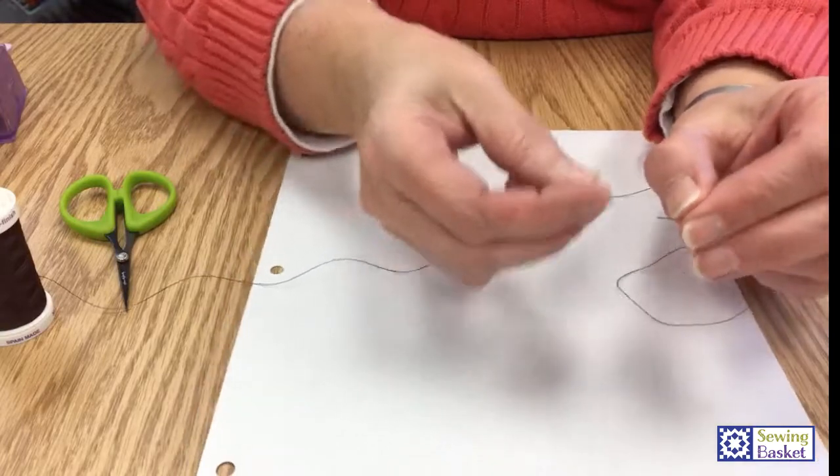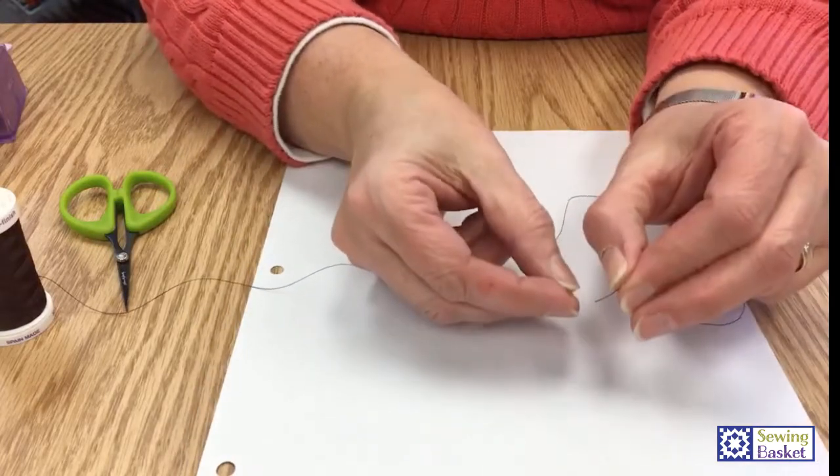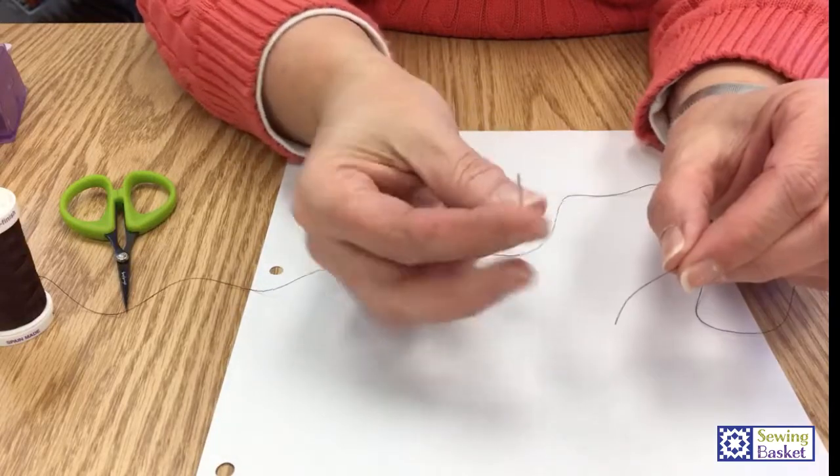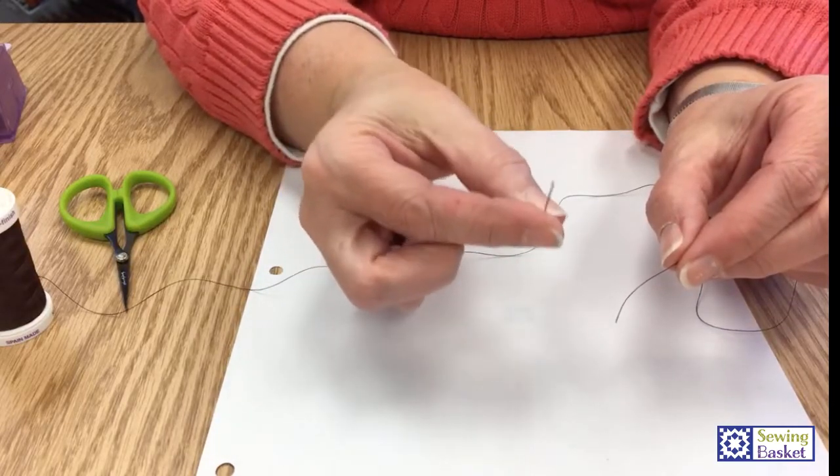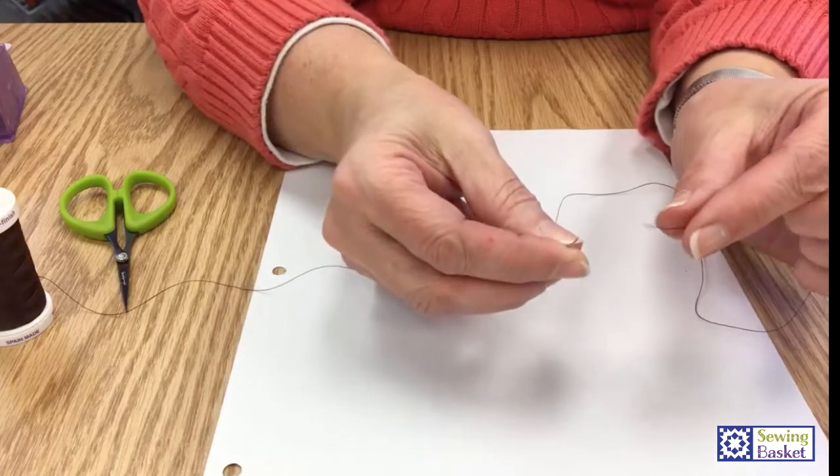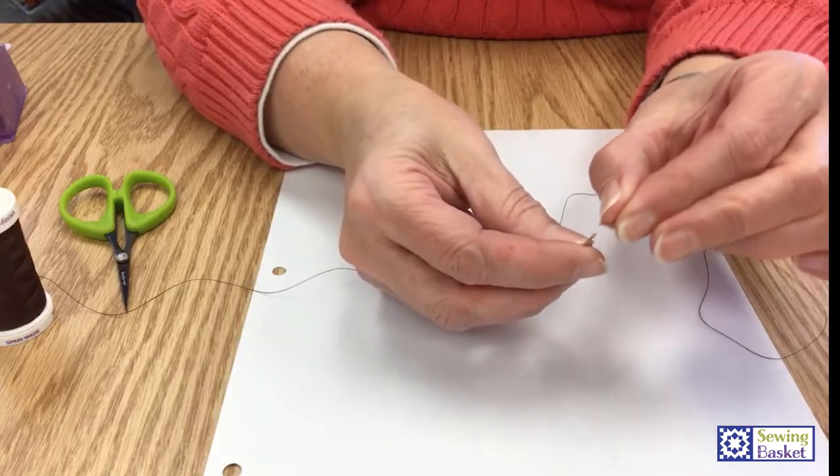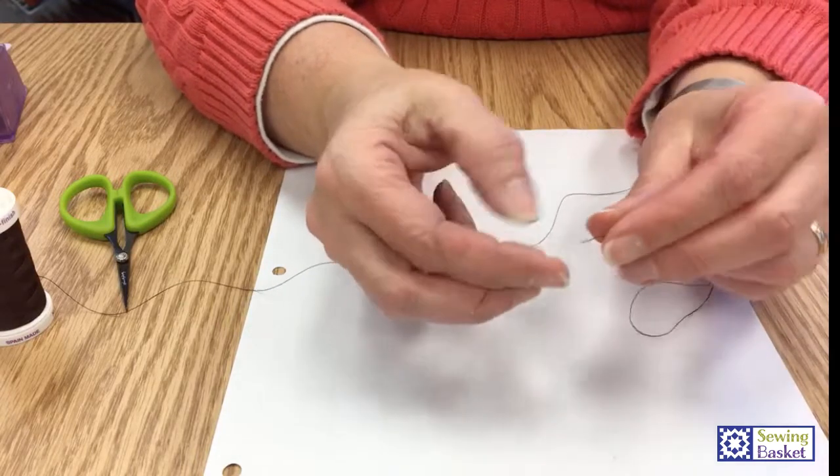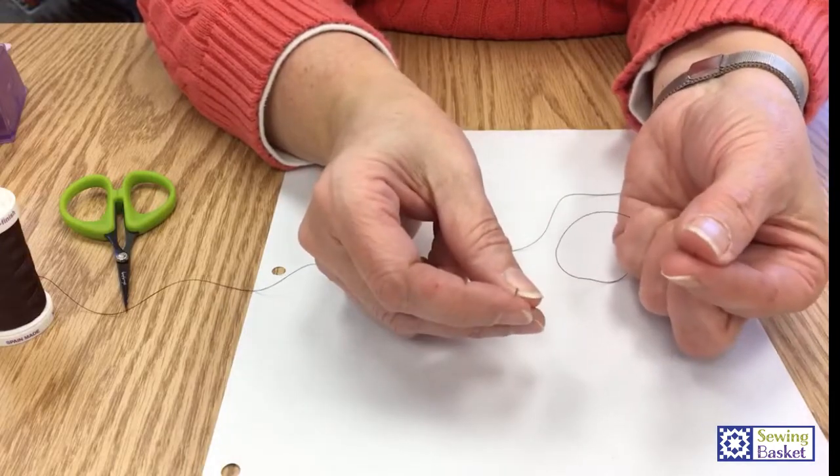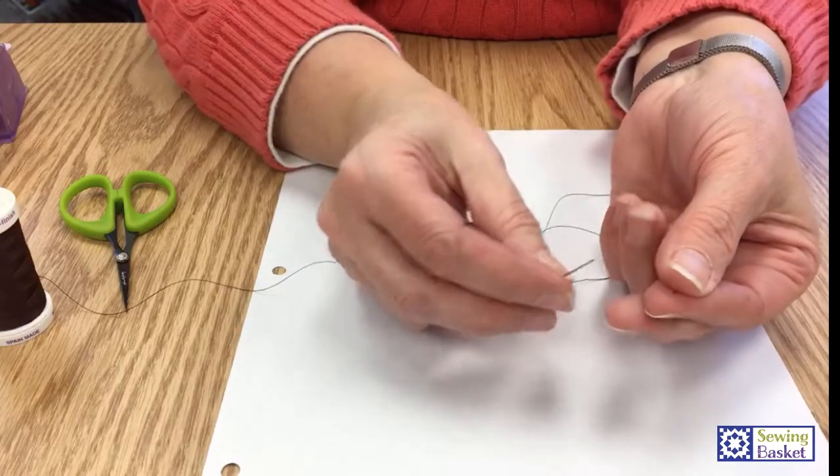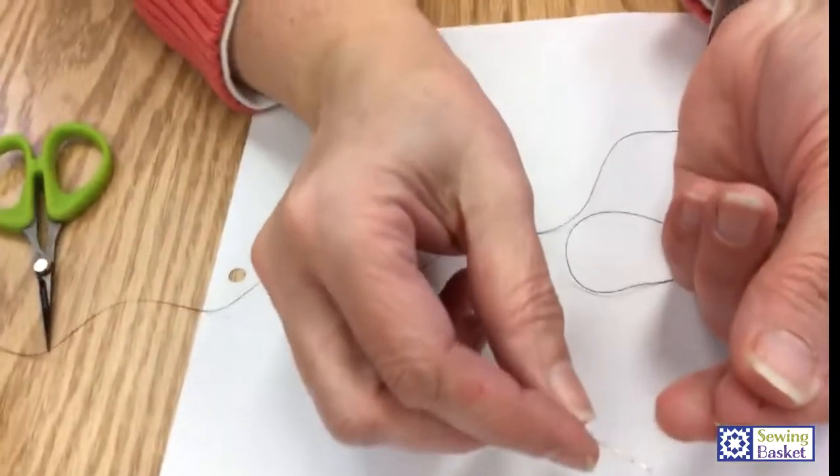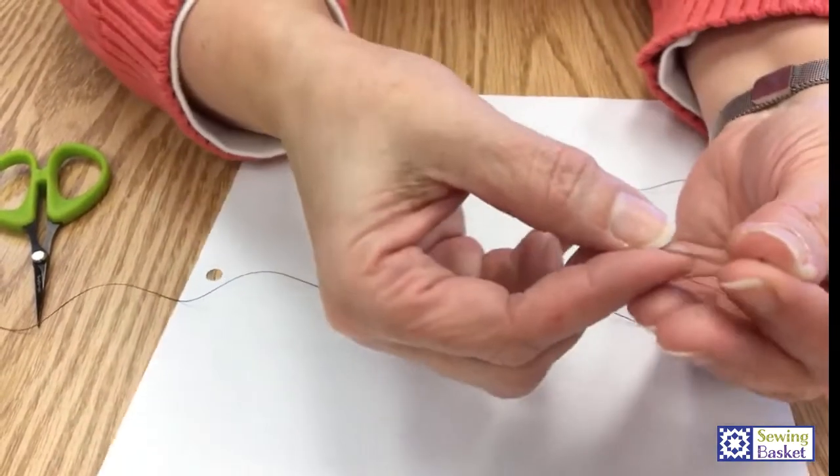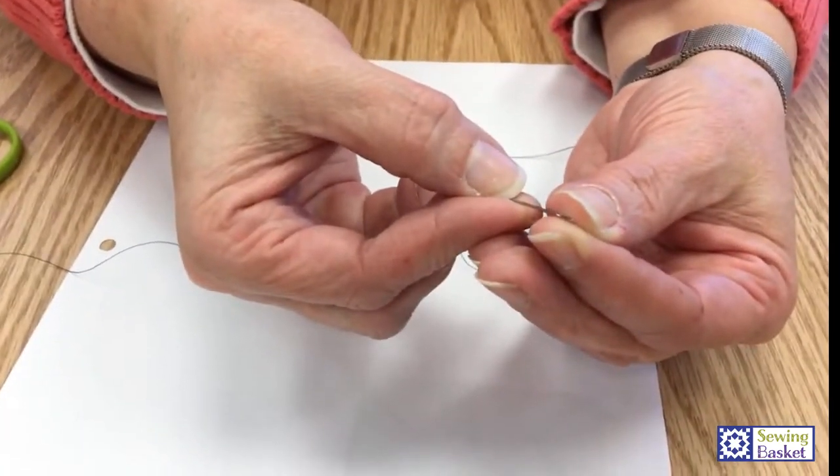The other thing people tend to do is they take this thread, which is a wobbly piece of thread, and their needle, which is a nice hard solid piece of metal, and they take the wobbly thread and stab it at the needle trying to hit that hole. If you switch it around, I'm going to take my thread and pull it into my fingers so you can barely see the point. Now I've stabilized the wobbly thread, and I'm going to take my needle and just lay it onto the tip of that thread.